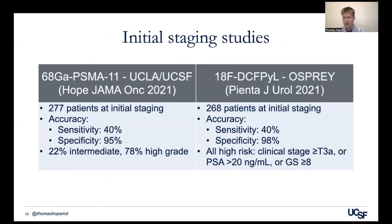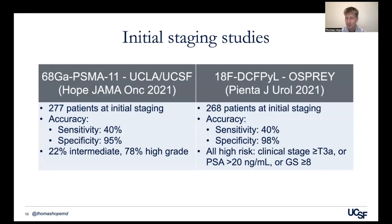In terms of the data, there are some trials to discuss. First are the initial staging studies — two major studies were done. One was performed at UCLA and UCSF, used to lead to the approval of PSMA-11, and the other was the Osprey trial, which evaluated DCF-PYL, or what became piflufostat. These are very similar studies with nearly identical accuracy numbers, showing how well we can see pelvic lymph nodes compared to surgery at initial staging.